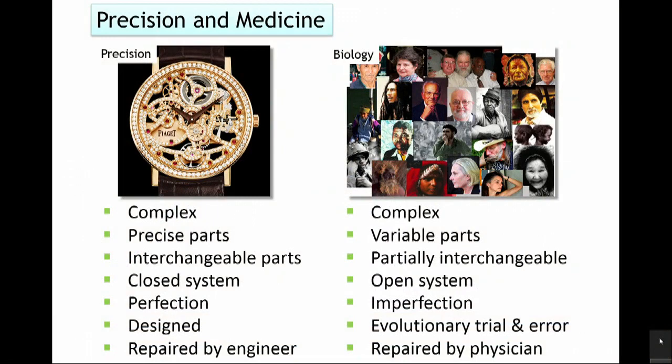Here I've contrasted precision and medicine, or precision and biology. If you think of precision, think of some sort of highly studied and designed machine — in this case an expensive Swiss watch. Whereas if you think of biology, you think of the idea that no two people look alike, no two people behave alike, and no two people respond to environmental challenges in exactly the same way. The overall goal of the move towards precision medicine is to individually understand each patient in terms of their individual strengths and weaknesses.